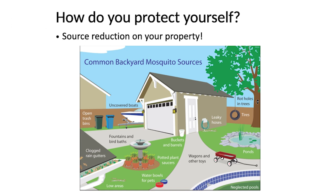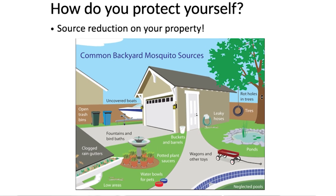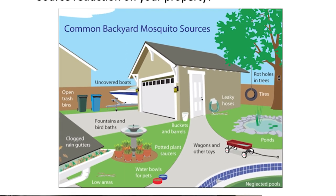You can play a big part in integrated pest management yourself at home by doing source reduction on your property. Mosquitoes can take advantage of a wide range of different habitats you wouldn't even think of. Fountains and birdbaths are a big one, clogged rain gutters, the saucers under potted plants, water put out for pets, any toys or other containers left out that fill with water. You want to make sure you're looking for these sources of water and removing the water source before mosquitoes start breeding on your property. In the summer it really only takes a few days for mosquitoes to lay their eggs and develop into an adult, so you have to be quick about it.